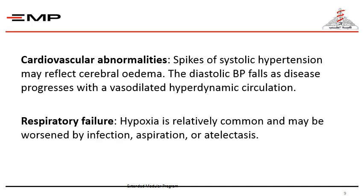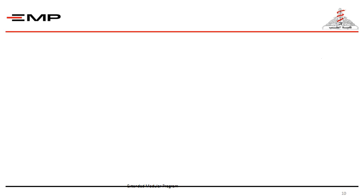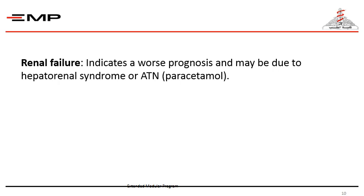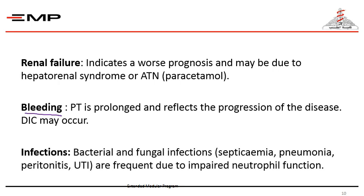Cardiovascular abnormalities with spikes of systolic hypertension may reflect cerebral edema, while diastolic pressure may fall as the disease progresses with a vasodilated hyperdynamic circulation. Respiratory failure occurs; hypoxia is relatively common and may be worsened by infection, aspiration, or atelectasis. Non-cardiogenic pulmonary edema is seen in approximately 10% of cases. Renal failure indicates a worse prognosis and may be due to hepatorenal syndrome or acute tubular necrosis. Prothrombin time is prolonged and reflects disease progression; DIC may occur. Bacterial and fungal infections, septicemia, pneumonia, peritonitis, and urinary tract infections are frequent due to impaired neutrophil function.